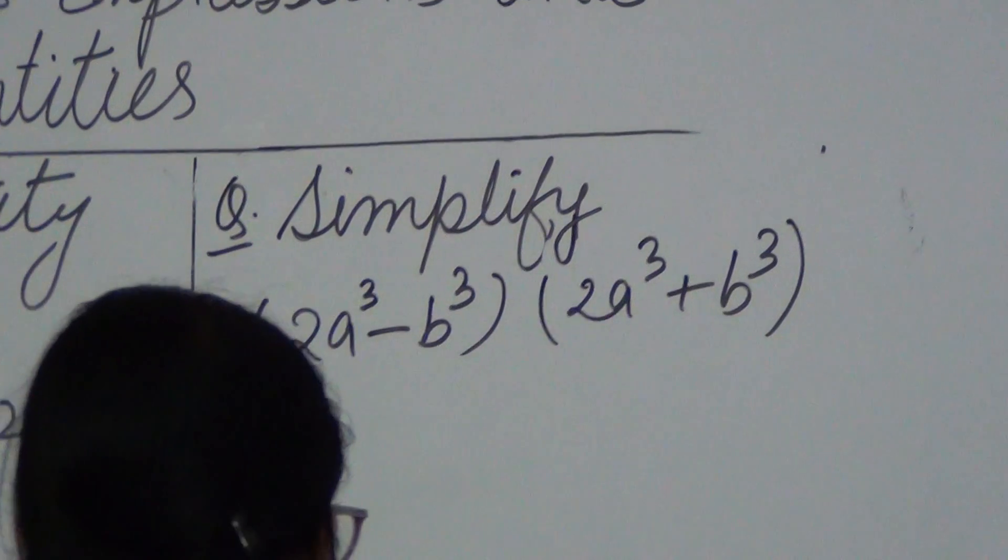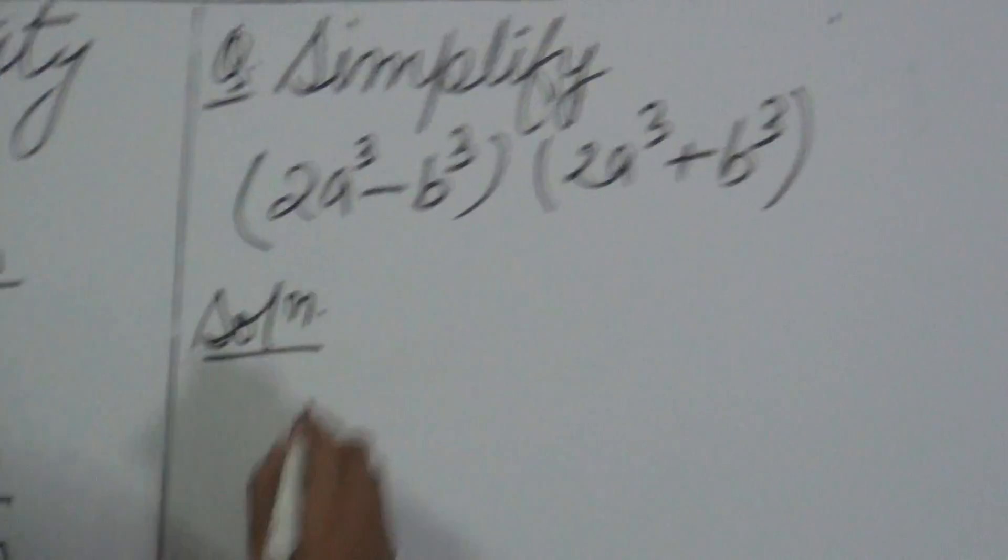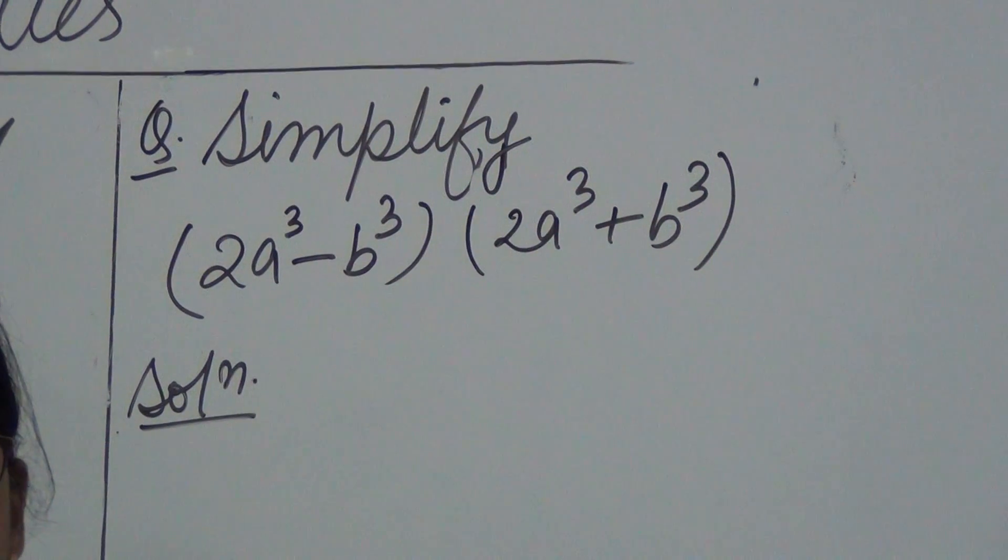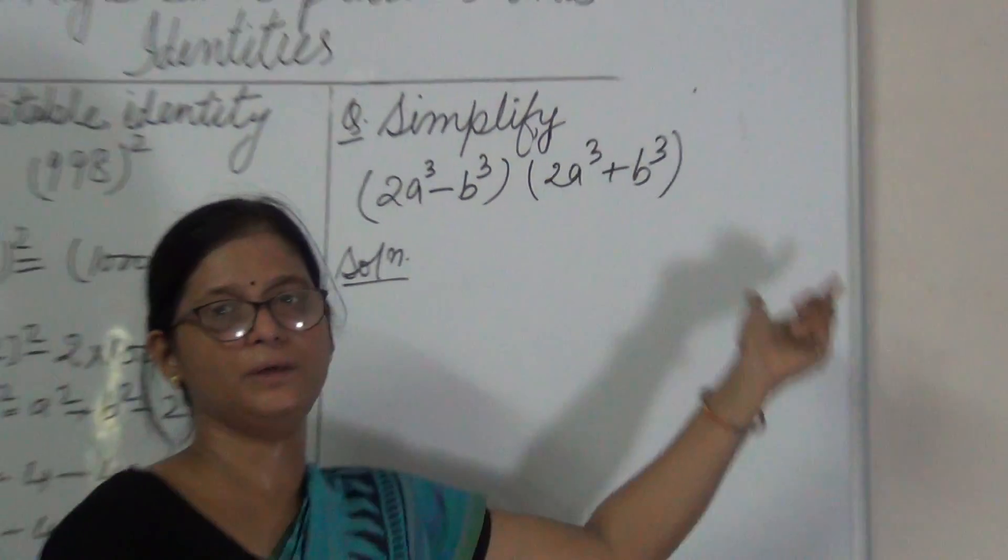Let us do one more sum. Simplify 2A cube minus B cube into 2A cube plus B cube.